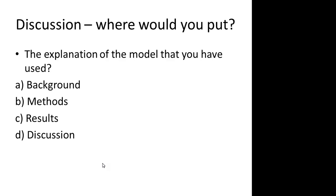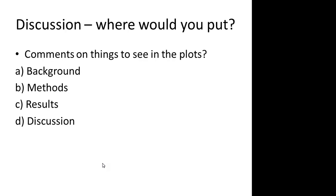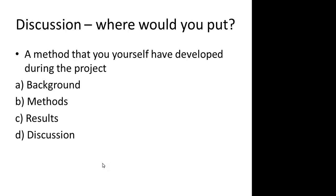So that is what I wanted to say about these three sections: methods, results, and discussion. In the end, there are four questions to pause and think about. First: if you have a model that you used but haven't really developed, where would you put it — background, methods, results, or discussion? Second: if it is a model you yourself developed, where would you put it? Third: if you have a number of plots and want to comment on what you see in them, where would you put that? And finally: if you have developed a new method as part of your project, where would you put that?